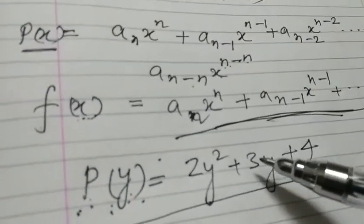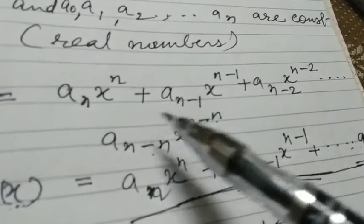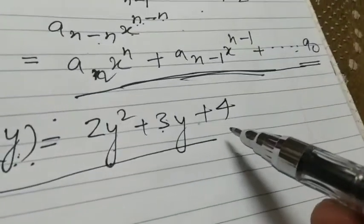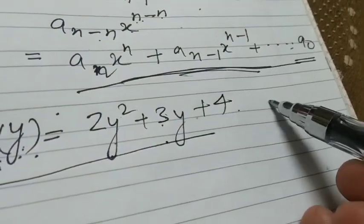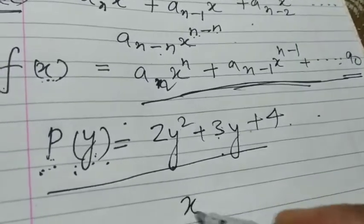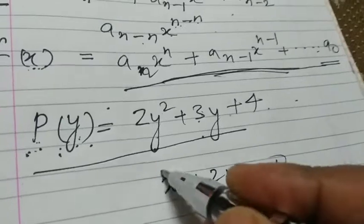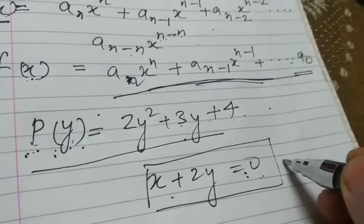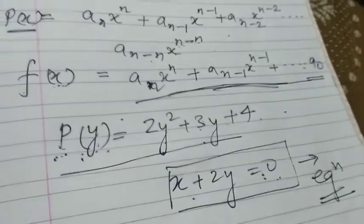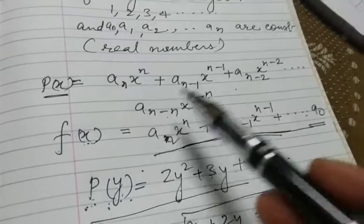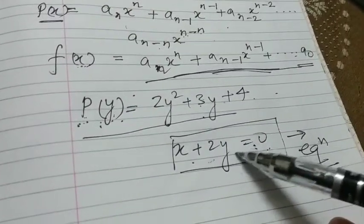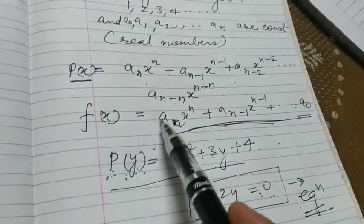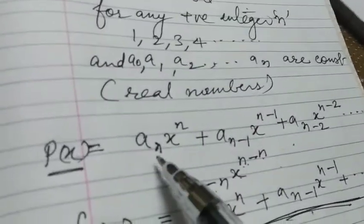Now let us come to the difference between a polynomial and an equation. A polynomial is an expression — when we write p(y), it has no left-hand side or right-hand side. An equation, like x + 2y = 0, has both an LHS and an RHS. So the basic difference is: a polynomial is just an expression in constants and variables, while an equation has both sides.